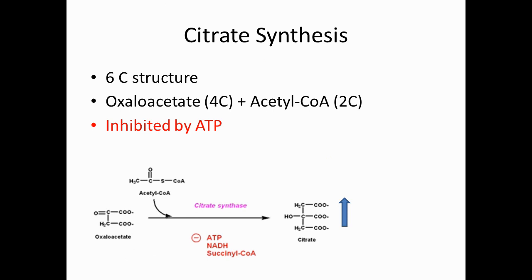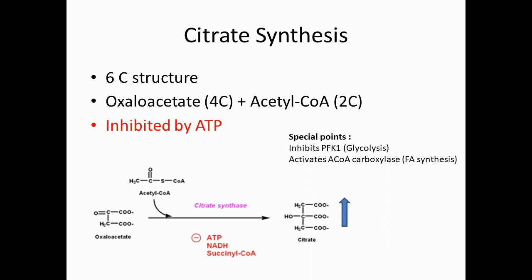The first step is citrate, which is a six-carbon structure made from oxaloacetate (a four-carbon structure) and acetyl-CoA (a two-carbon structure). As you can see in the picture, oxaloacetate and acetyl-CoA form citrate with the enzyme citrate synthase, which is inhibited by ATP, NADH, and succinyl-CoA.